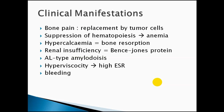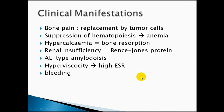Hyperviscosity: the increased titer of M protein — light chains, IgG, IgA — in the blood causes a high ESR. ESR, as we know from earlier lectures, is the erythrocyte sedimentation rate, a non-specific test used to assess likelihood of infection or inflammation. Elevated immunoglobulins give a high ESR reading. Bleeding can also occur because hyperviscosity prevents platelets from reaching injury sites. In extreme cases, high viscosity can lead to blood clotting, causing stroke.